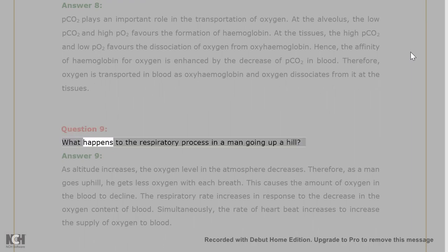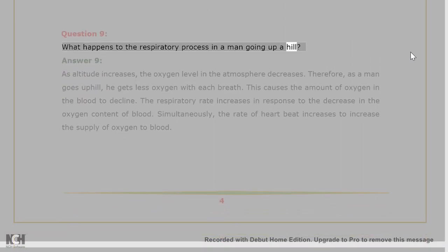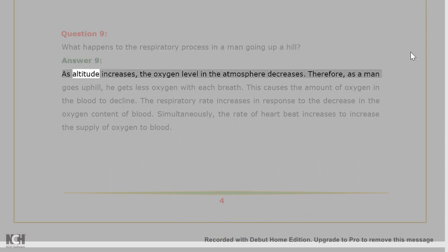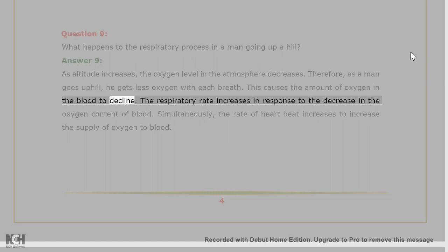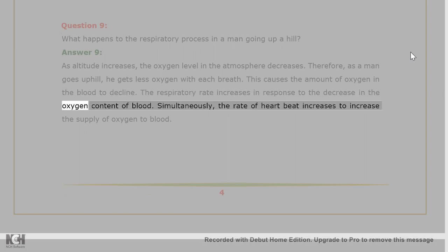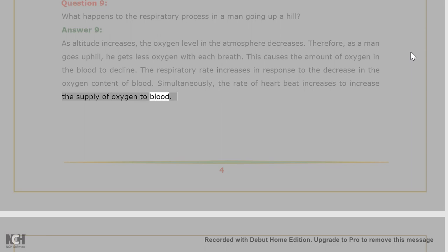Question 9: What happens to the respiratory process in a man going up a hill? Answer 9: As altitude increases, oxygen level in the atmosphere decreases. Therefore, as a man goes uphill, he gets less oxygen with each breath, causing the amount of oxygen in the blood to decline. The respiratory rate increases in response to decreased oxygen content of blood, and simultaneously the rate of heartbeat increases to increase the supply of oxygen to blood.